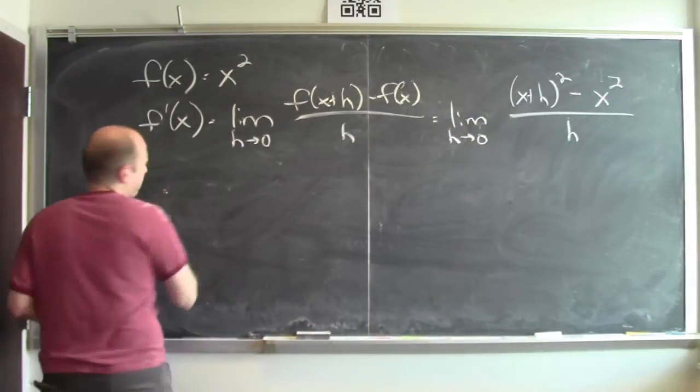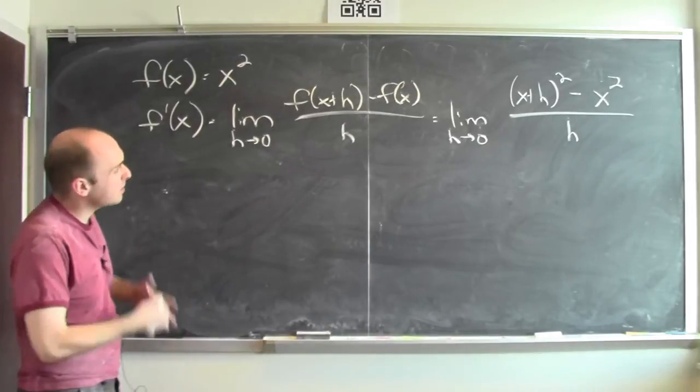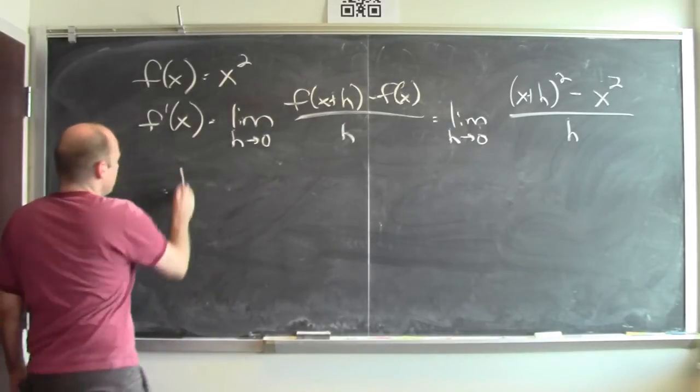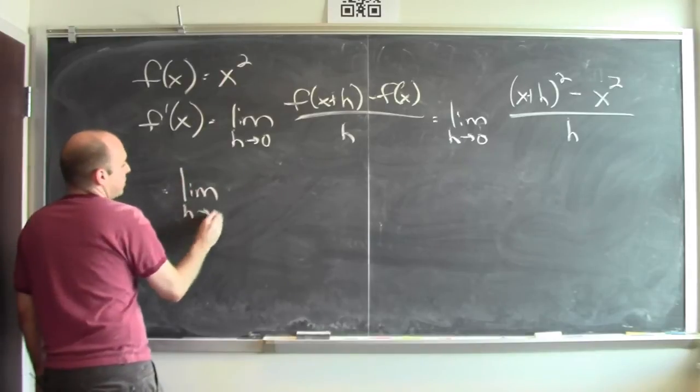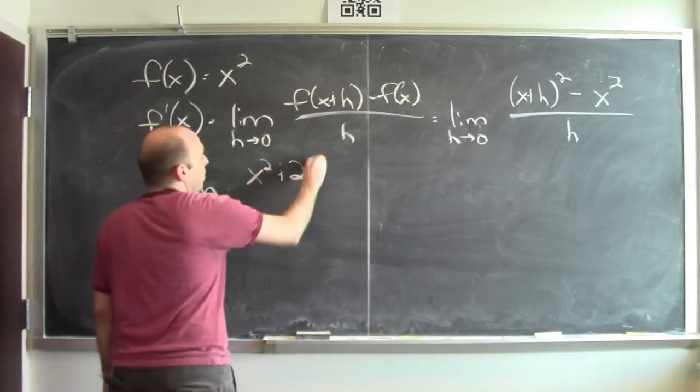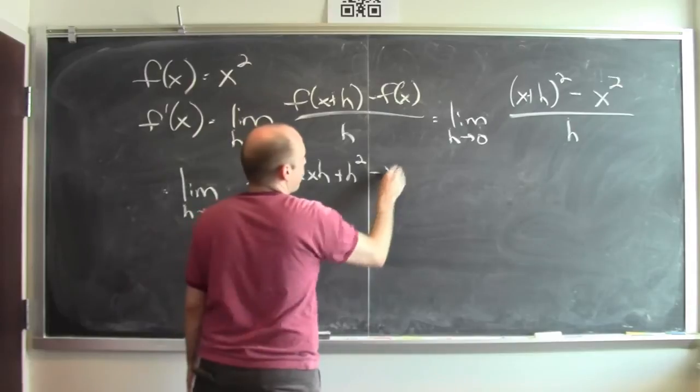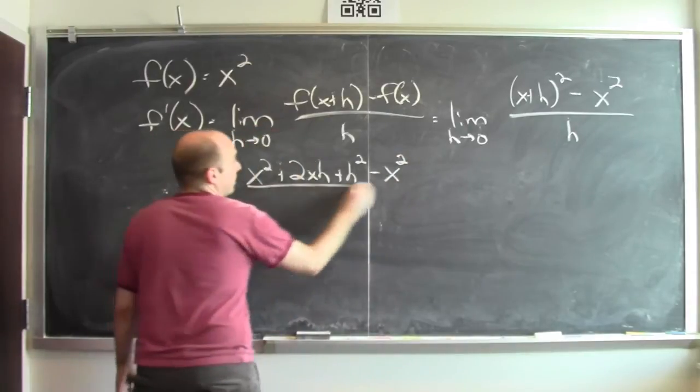I can calculate that limit. That's the limit of (x+h) squared minus x squared. Let's expand out the numerator. This is the limit as h goes to 0 of what's (x+h) squared. It's x squared plus 2xh plus h squared minus x squared over the denominator h.